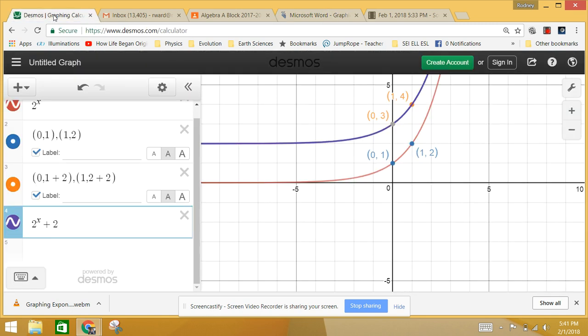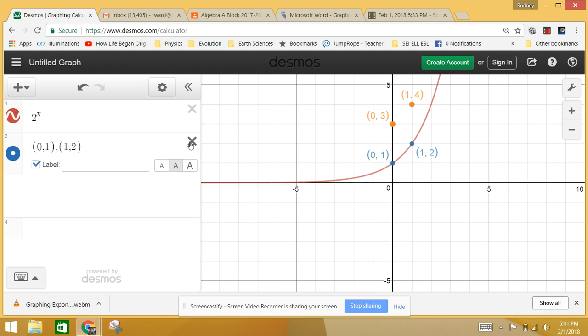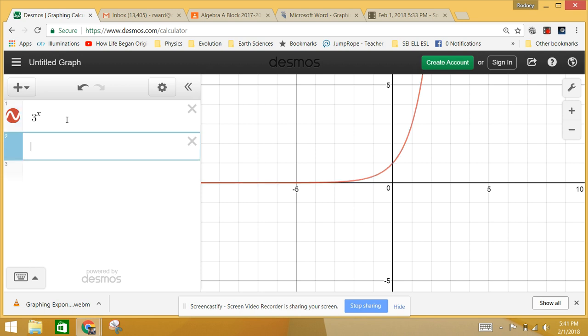So let's deal with the parent function, which is 3 to the x. Instead of 2 to the x, I'm going to have 3 to the x. And we can plot a couple of points: (0, 3 to the 0) and (1, 3 to the 1). We'll label those. And as you might have predicted, we get (0, 1) and (1, 3). We once again have an asymptote at y equals 0 because 0 is the basement for this function. It can't get to 0 or into the negatives.